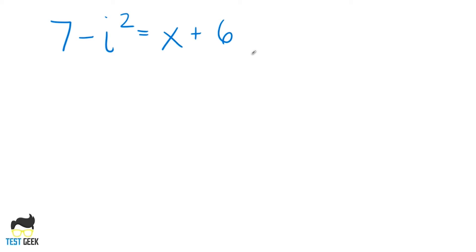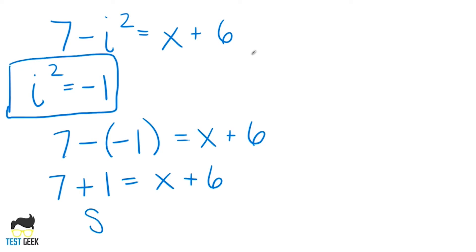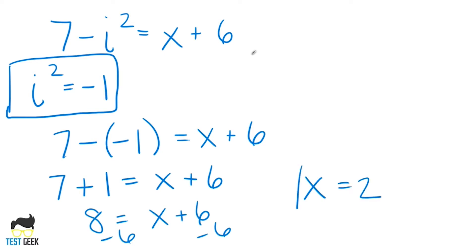Then we'll end up with a problem that looks a lot less scary. So what is i squared? Negative one. Let's replace i squared with negative one. So we have seven minus (negative one) equals x plus six. Now it's just a basic algebra problem. Seven minus negative one becomes seven plus one, so seven plus one equals x plus six. Combine terms on the left: eight equals x plus six. Subtract six from both sides, and we end up with two equals x. So if they're asking for x on the SAT or ACT, the answer is two.